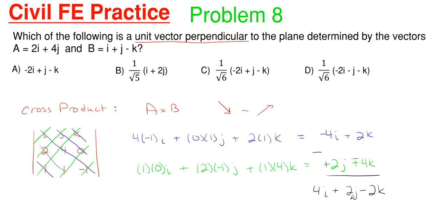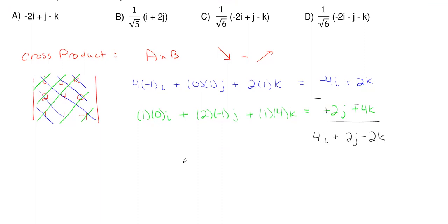All righty, so this is our cross product that we just found, but we have to find the unit vector perpendicular to this overall here. So to obtain the unit vector, what we have to do is we have to divide this, what we just found, by the magnitude. So in order to find our magnitude here,